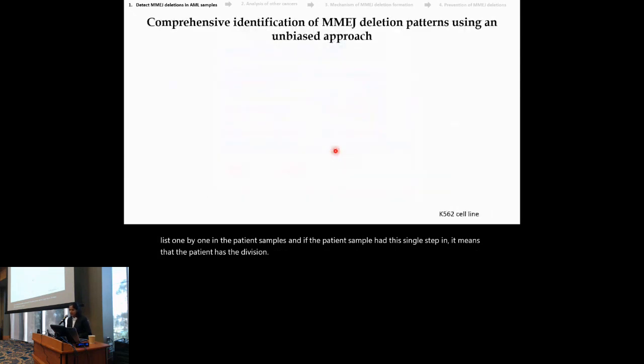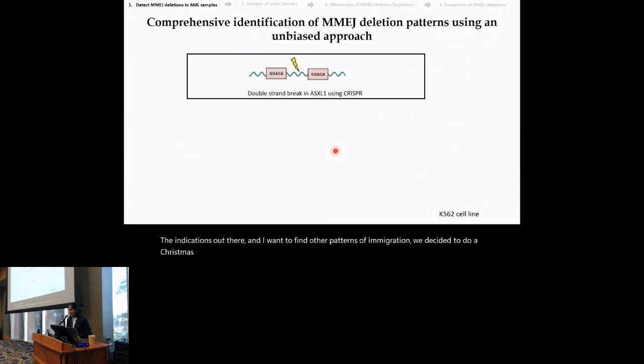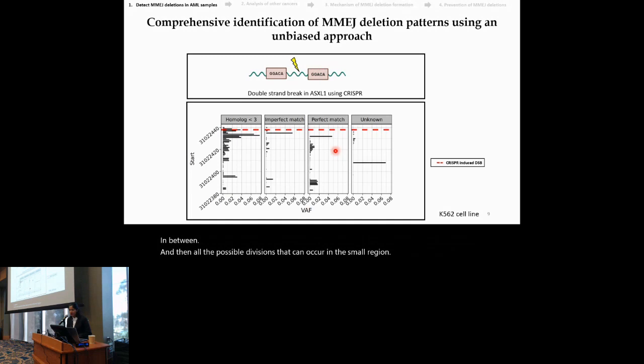Now, it is quite possible that we are not looking at all the MMG deletions out there, and in order to find other patterns of MMG deletions, we decided to do a CRISPR screen in the ASXL1 MMG deletion. We did a double-strand break in between the ASXL1 homologies, and then we made a list of all the possible deletions that can occur in this small region. And what we found out was, not only do we get a perfect match type of MMG deletion, where we retain one homology from the two homologies, but we also get the imperfect match type of MMG deletion.